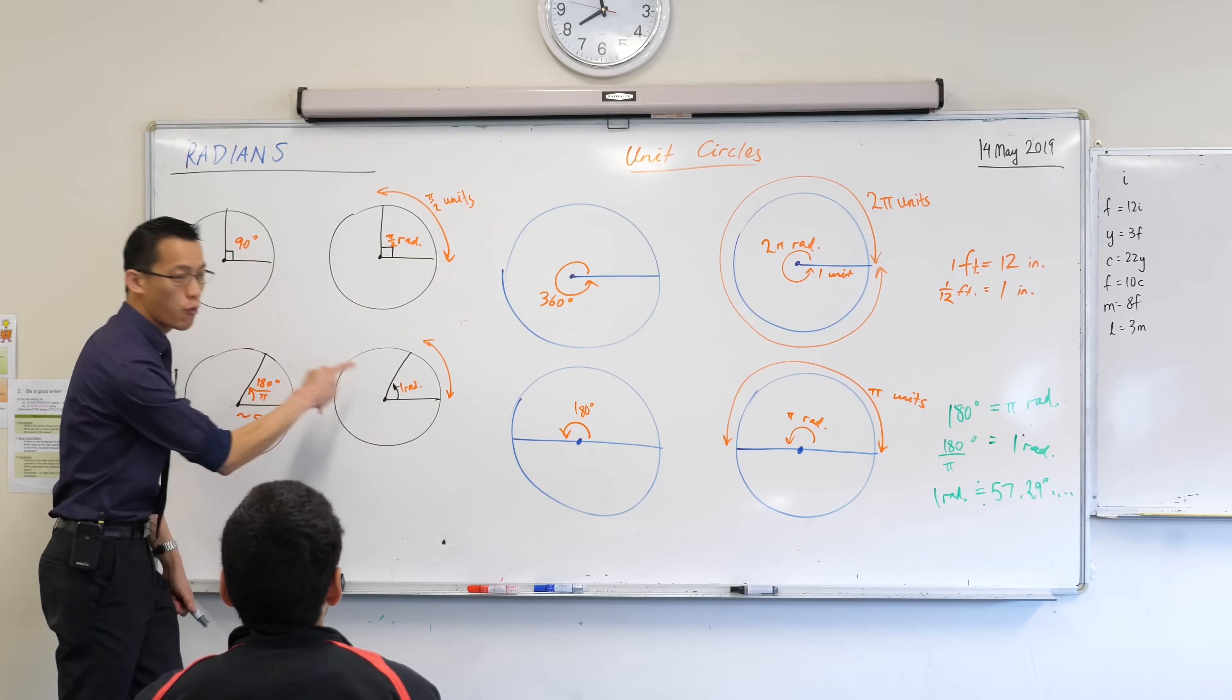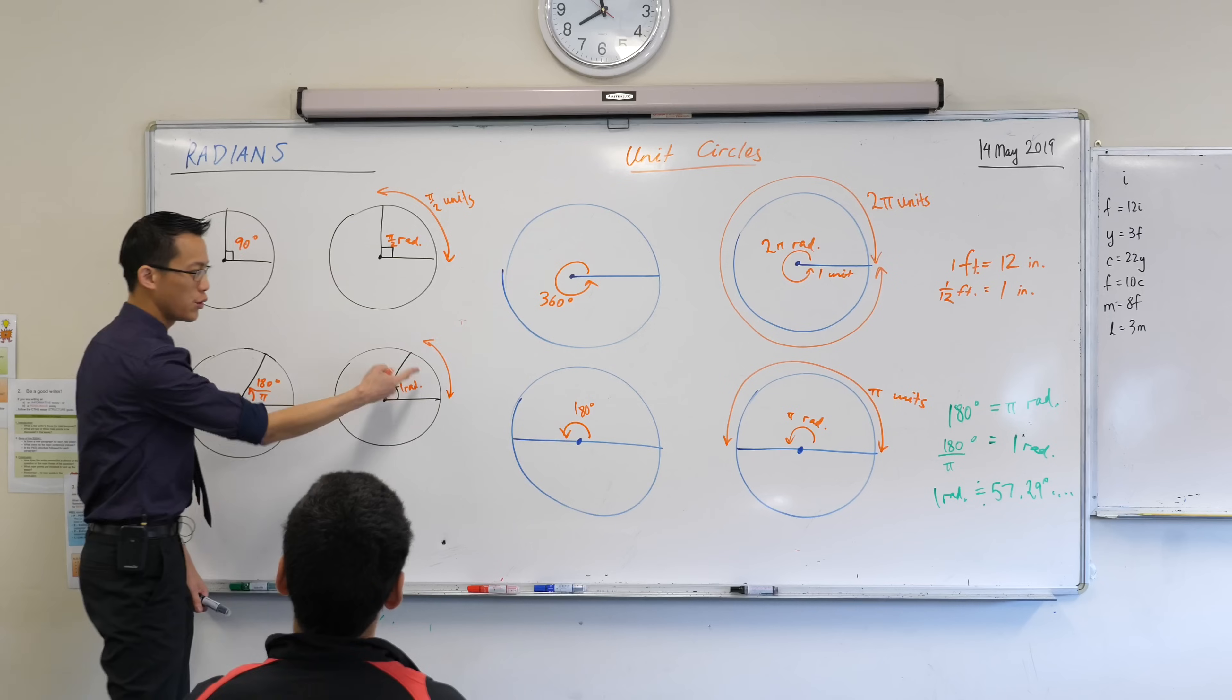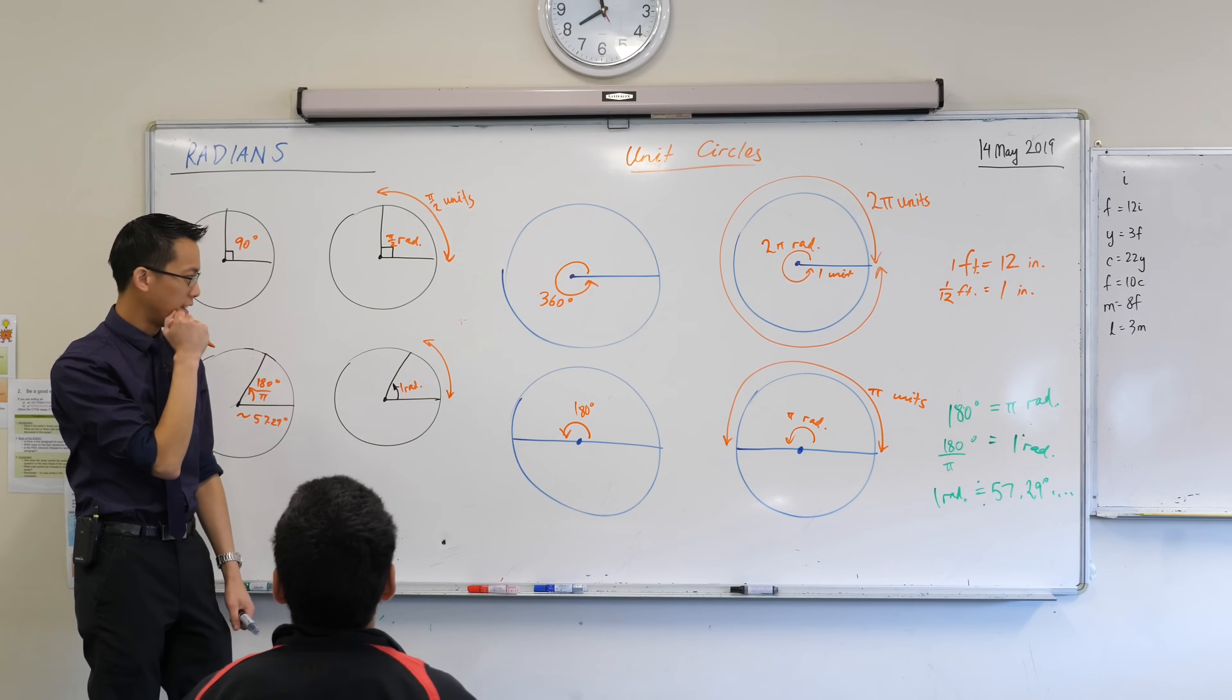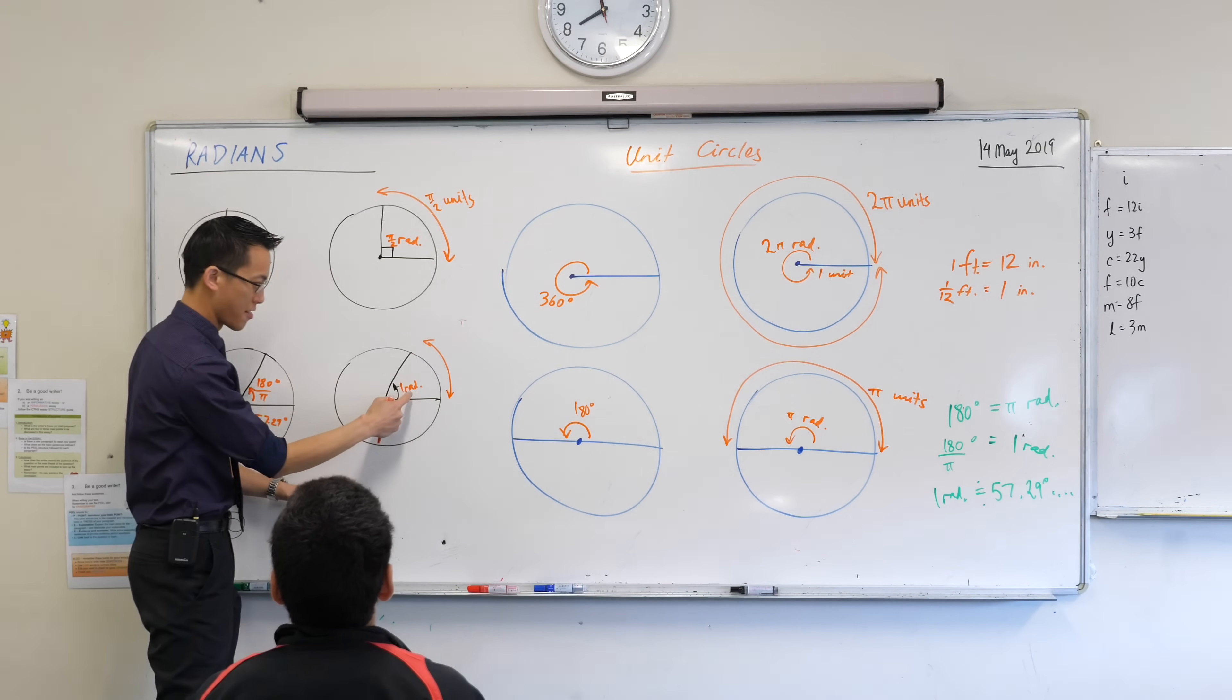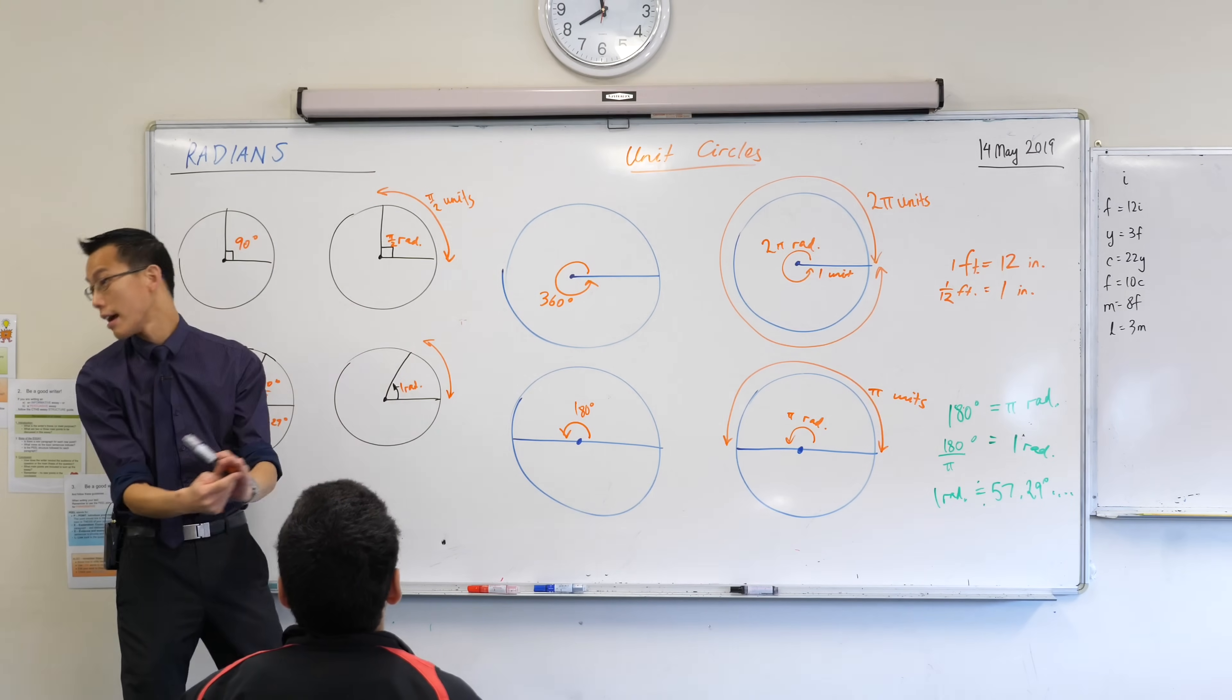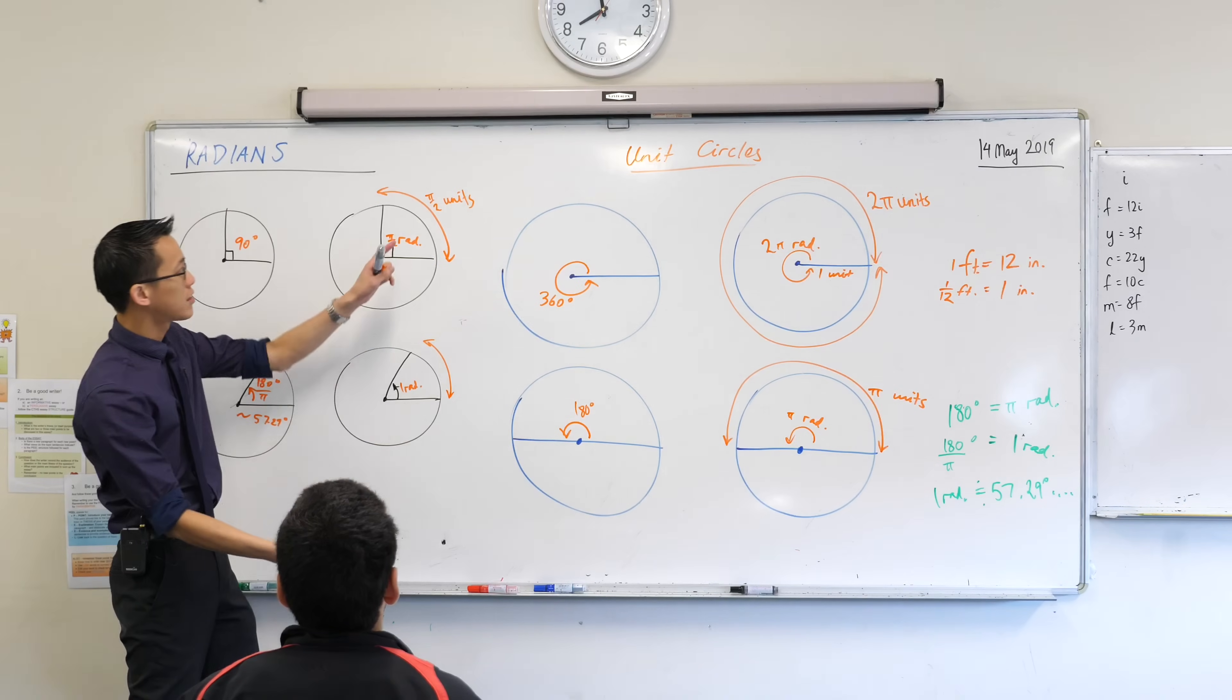If the angle is one radian, how far around the edge of the circle will you have gone? Think about this, right? The radian is our measure of how far have you turned your angle, right? But this thing here is just a length, right? The units I've been using are, well, I've been using units, because I don't know if they're centimeters or inches or whatever.